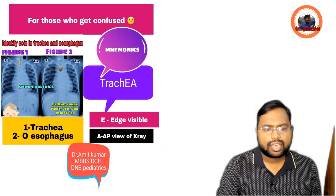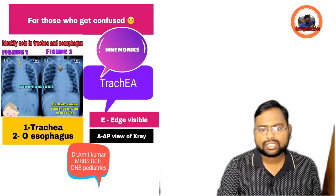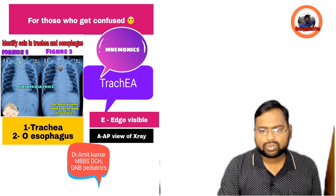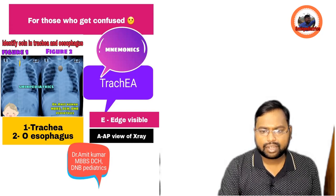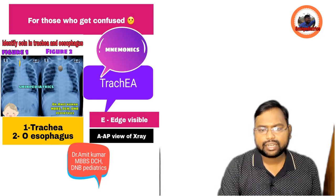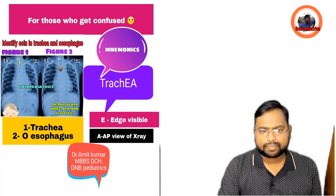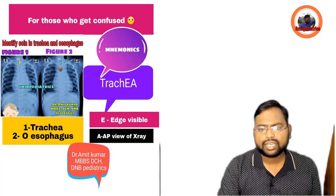If you get a whole circle, then it is in the esophagus. But the final diagnosis is made by either bronchoscopy, if it is in the trachea, or endoscopy, if it is in the esophagus or beyond.